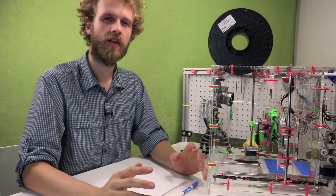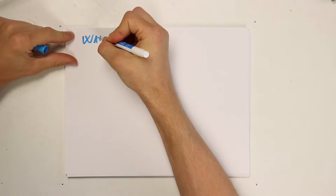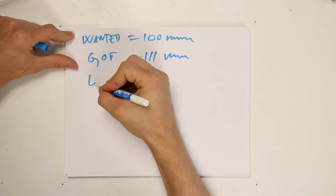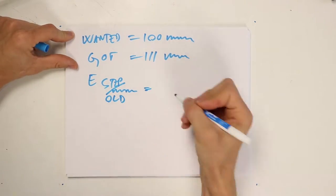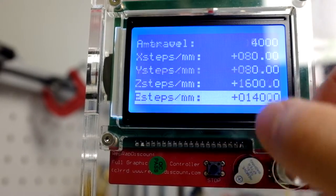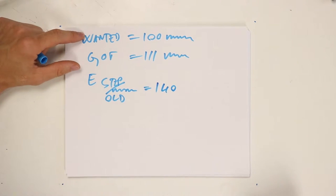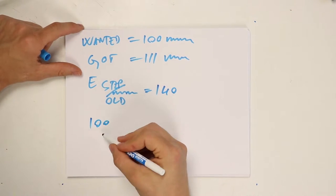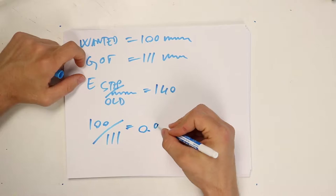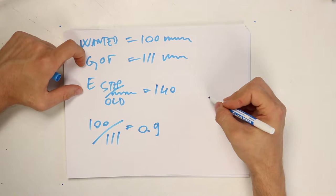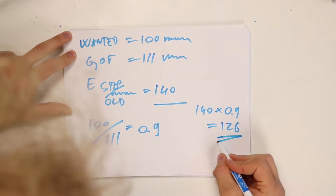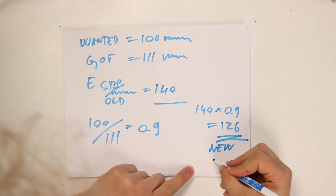So let's figure out the new E-steps per millimeter. What we wanted to extrude was 100 millimeters, but what we got was 111 millimeters. The old E-steps per millimeter are, let's check it in the settings. Go to your settings, motion, scroll all the way down and there it is. E-steps per millimeter 140. So now we're gonna divide what we wanted with what we got to get basically a correction ratio. This is about 0.9. Now if we take the old E-steps and multiply it with the correction ratio, we get 126 and that's our new E-steps per millimeter.